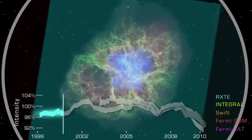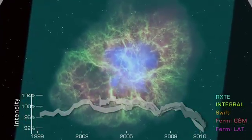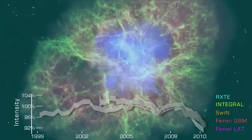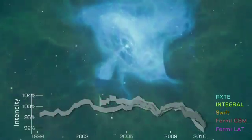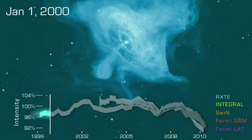What's going on? Scientists think the X-rays reveal processes deep within the nebula, in a region powered by a rapidly spinning neutron star, the core of the star that blew up.